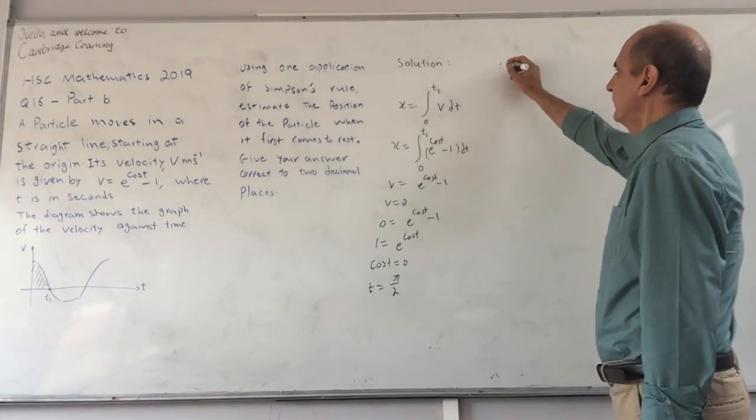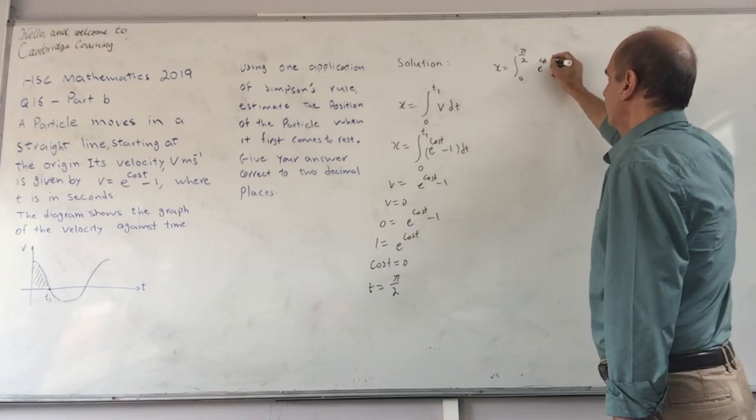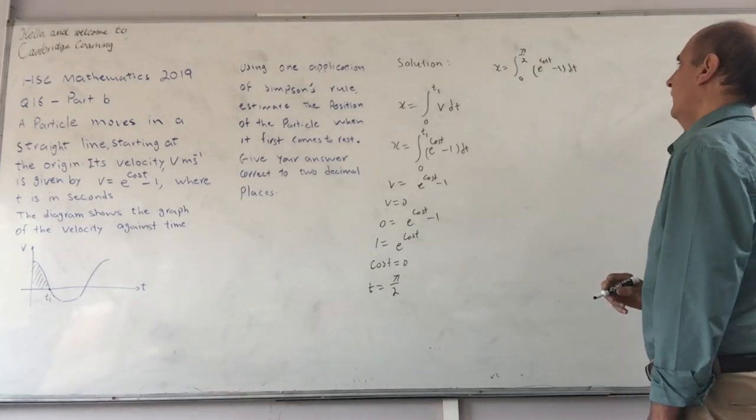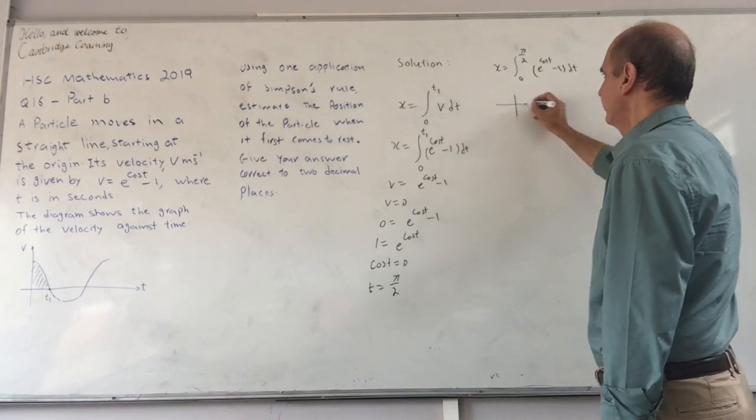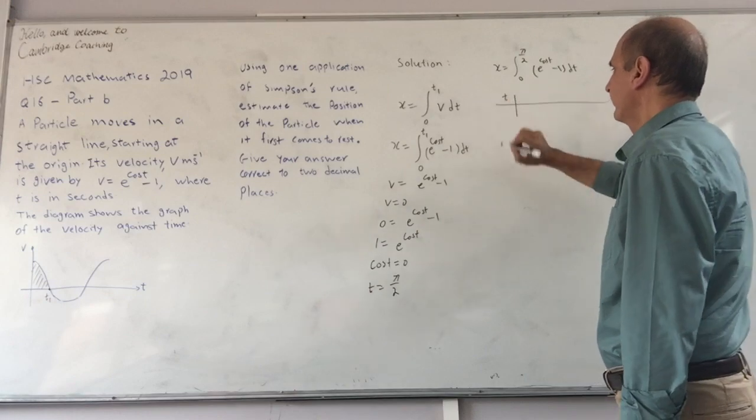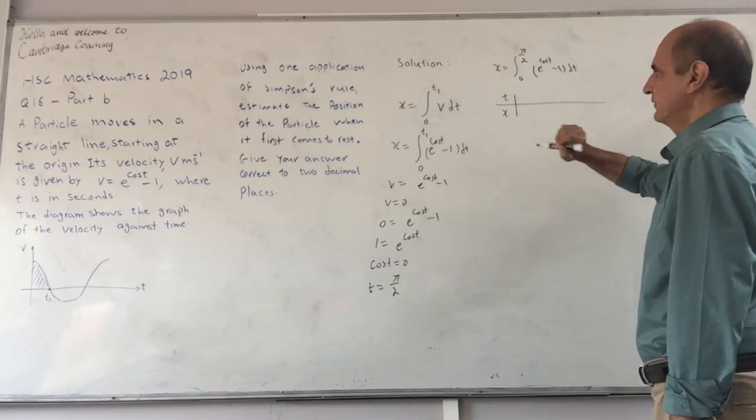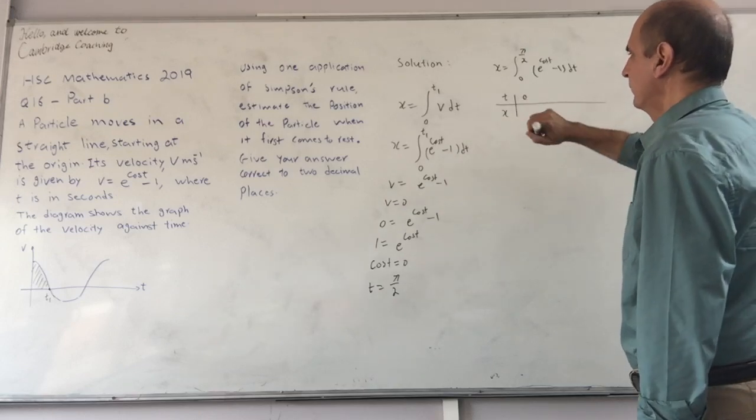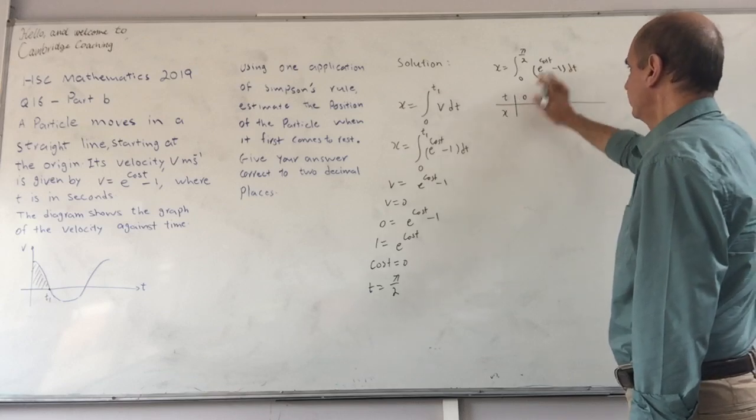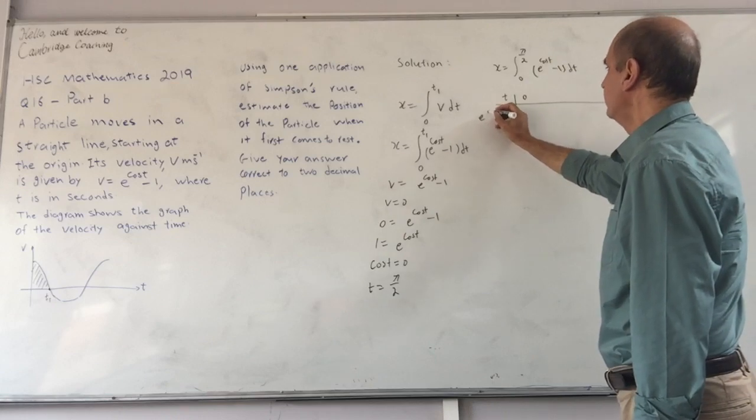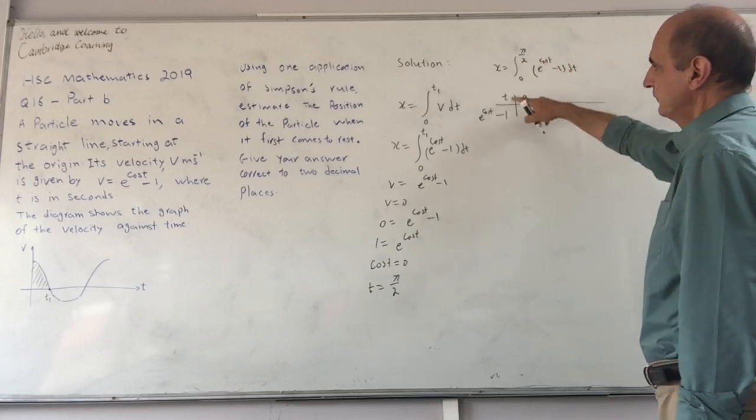With that in mind, x equals the integral from 0 to π/2 of e to the cos t minus 1, dt. Using Simpson's rule with one application, we need three time values, and then we're going to find the integral of e to the cos t minus 1.